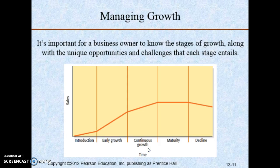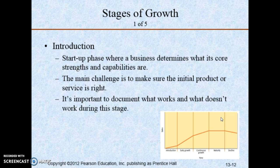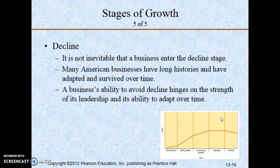For managing growth, remember this graph with sales over time showing the five stages — five phases of growth: introduction, early growth, growth and continuous growth, maturity, and decline. See the curve and how it evolves over time, and remember the explanation and the strategies for each one of those stages.